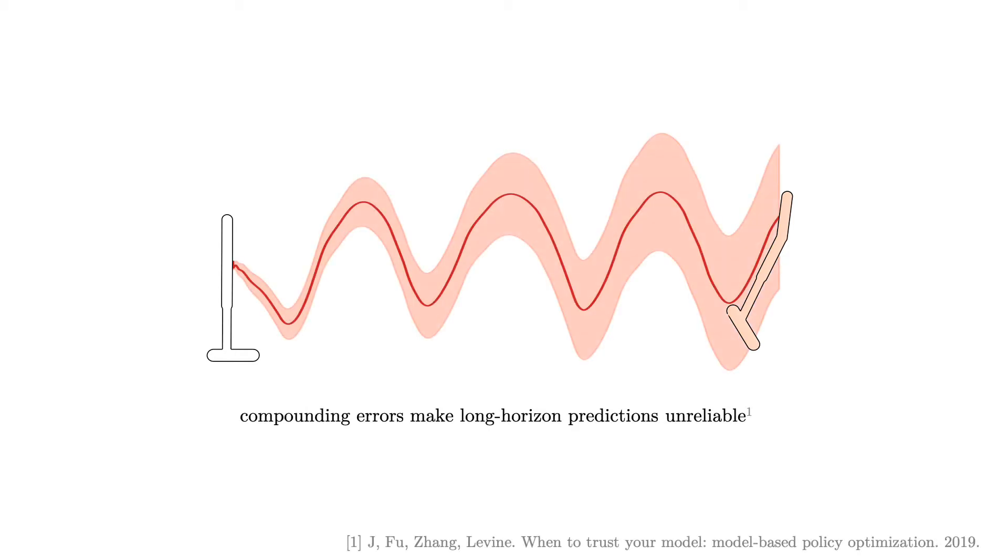Inaccuracies in learned models can compound over the course of this rollout, meaning that models trained for single-step prediction may not provide reliable information about longer horizons.